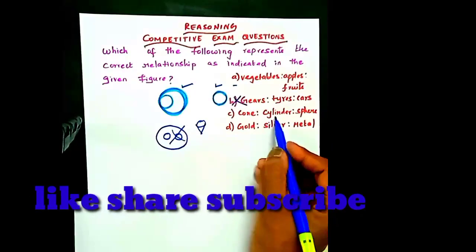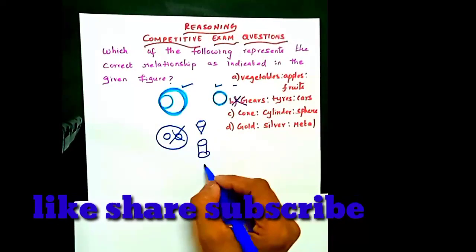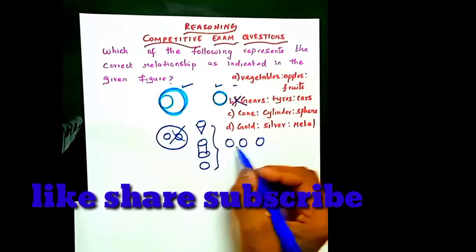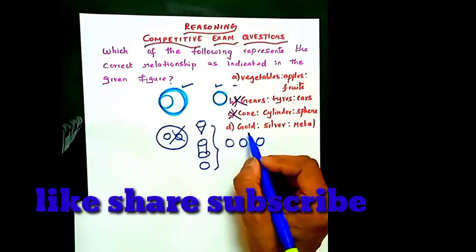Next, cone, cylinder, and sphere. These three symbols are different, which is option C.